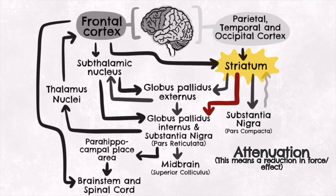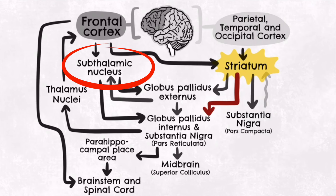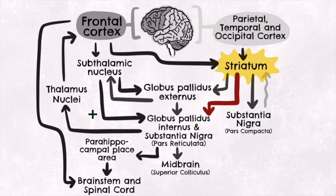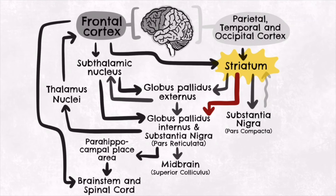Acting somewhat in parallel is the circuit that includes the subthalamic nucleus. When a voluntary movement is initiated by cortical mechanisms, a separate excitatory signal is sent to the subthalamic nucleus. The subthalamic nucleus projects in a widespread pattern and excites the globus pallidus pars interna, and this increased GPI activity causes inhibition of thalamocortical and brainstem motor mechanisms.